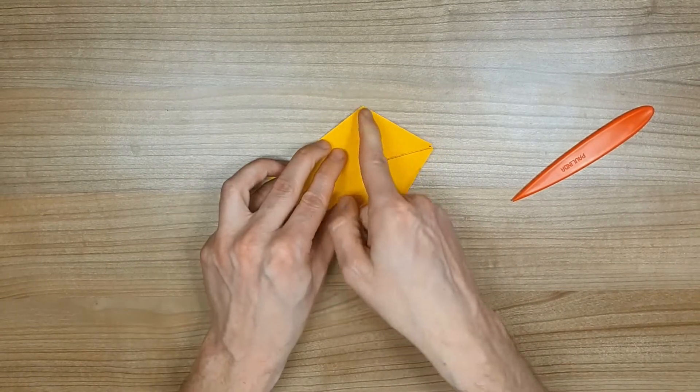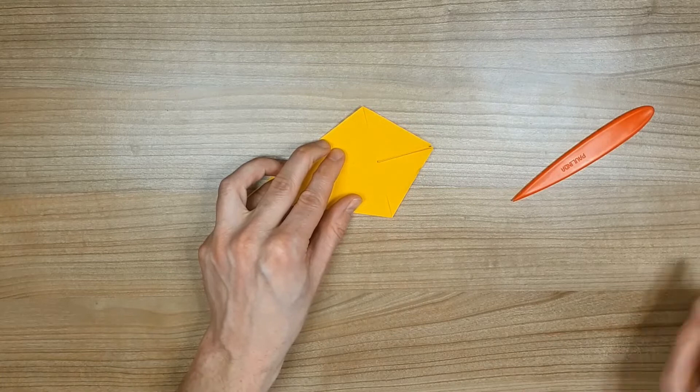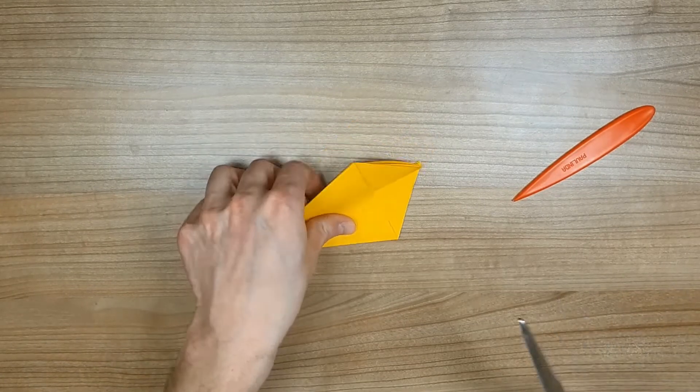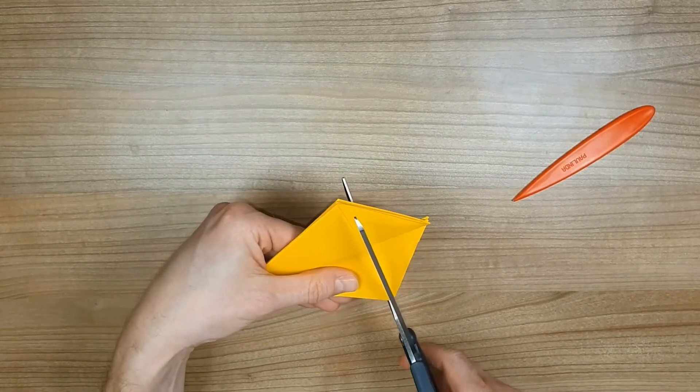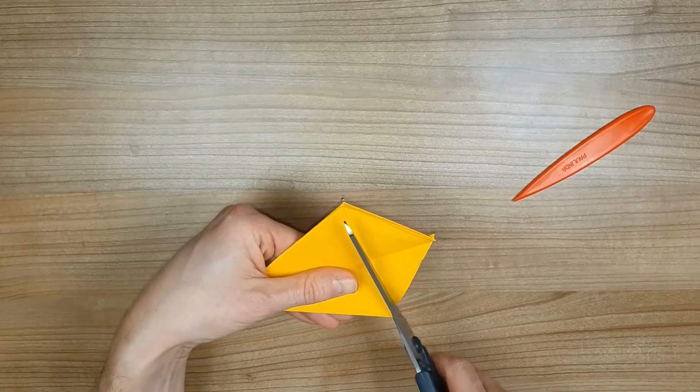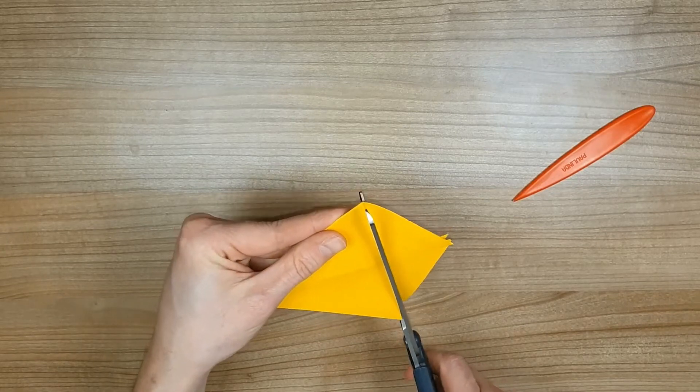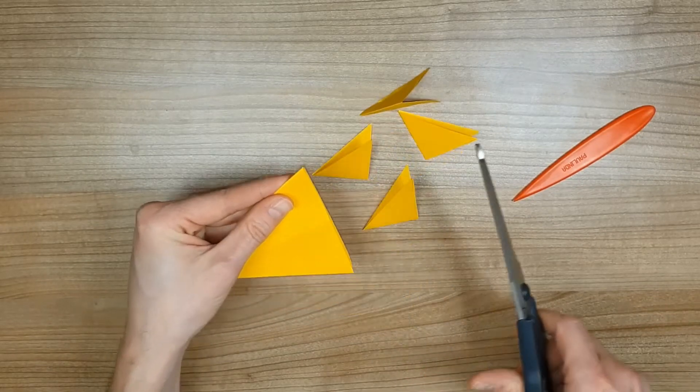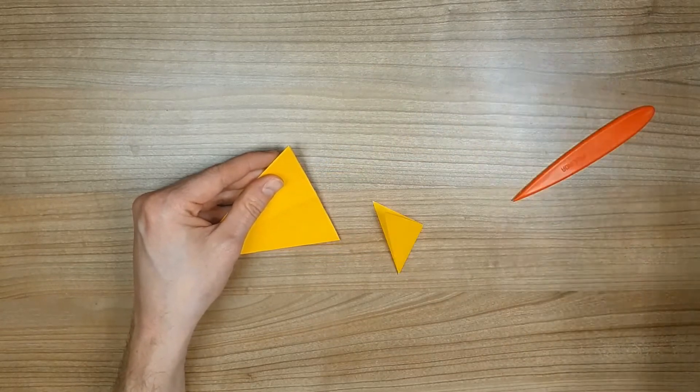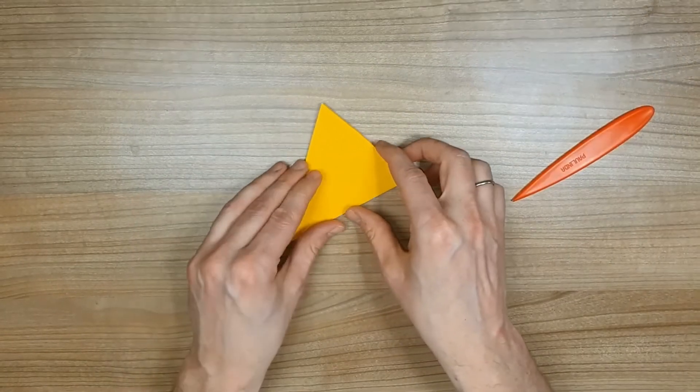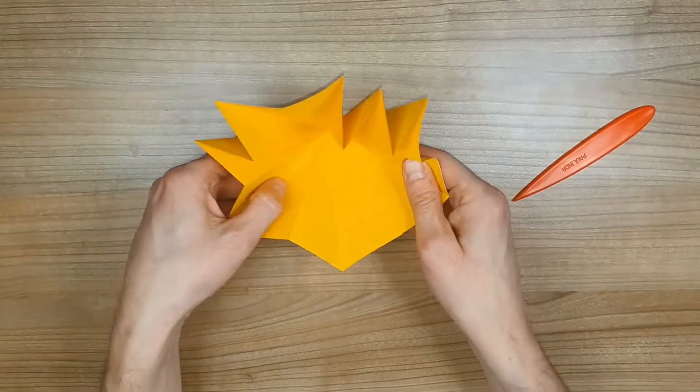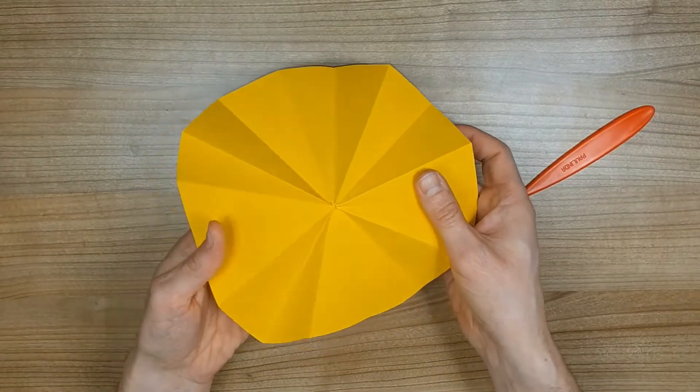When you're done, cut off the small triangle with a scissor. Turn the paper inside out and fold it back together till you have a Christmas tree shape.